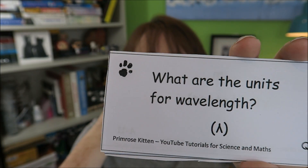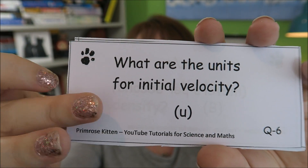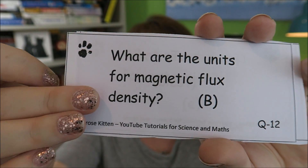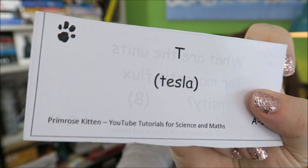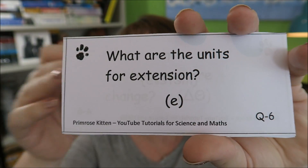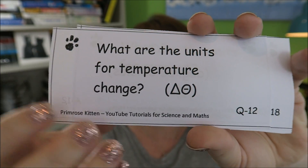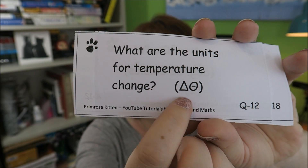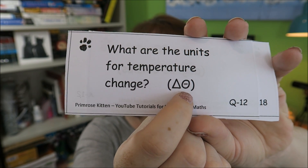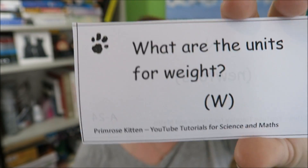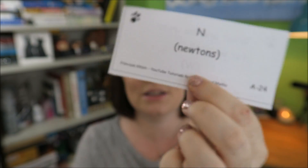What are the units for wavelength? Wavelength is measured in meters. What are the units for initial velocity? Initial velocity, just another form of velocity — meters per second. What are the units for magnetic flux density? They are measured in teslas. What are the units for extension? Extension is making something longer, so it's just measured in meters. What are the units for temperature change? Notice the funny little symbol there — the triangle is delta, that means change, and it's measuring degrees Celsius. What are the units for current? Current is measured in amps. And what are the units for weight? Weight is measured in newtons, not in kilograms as everyone thinks.